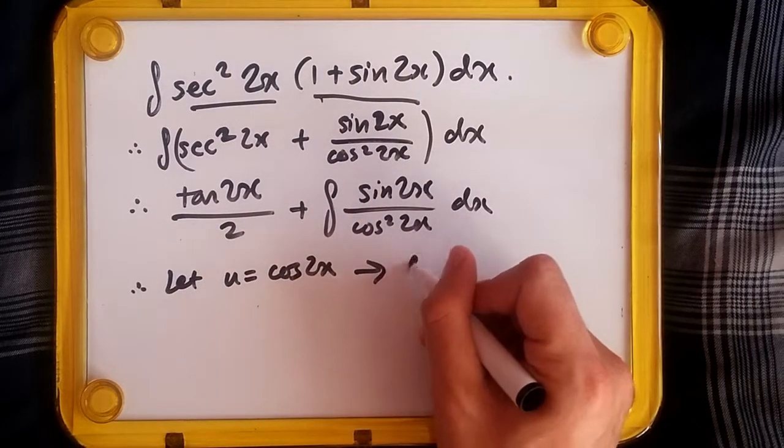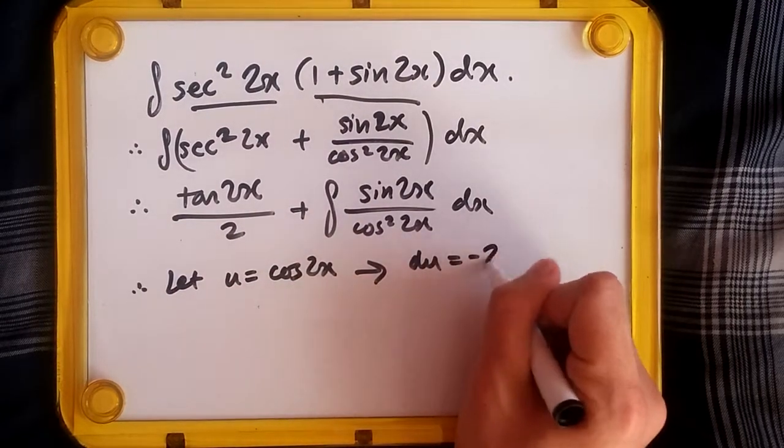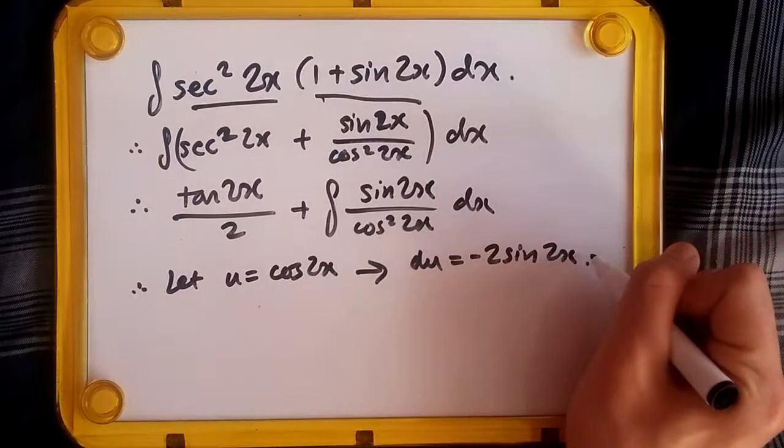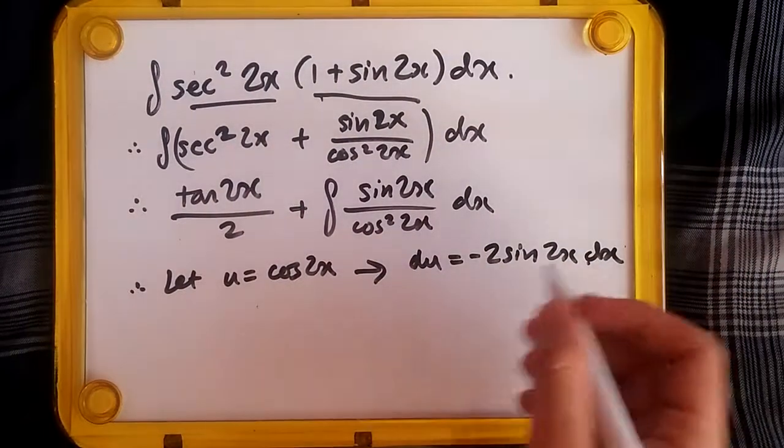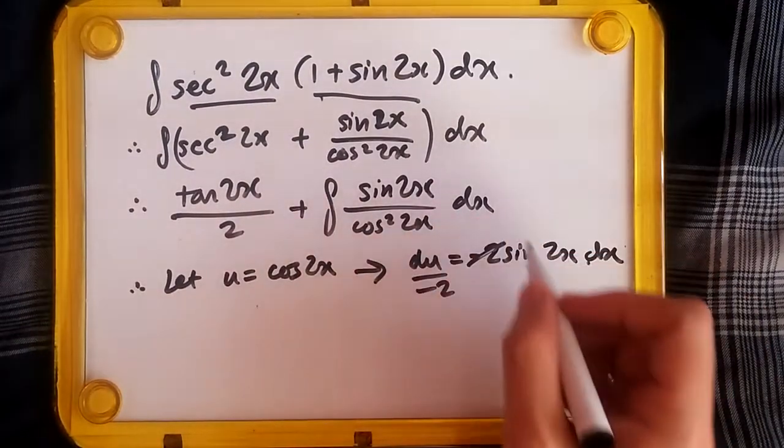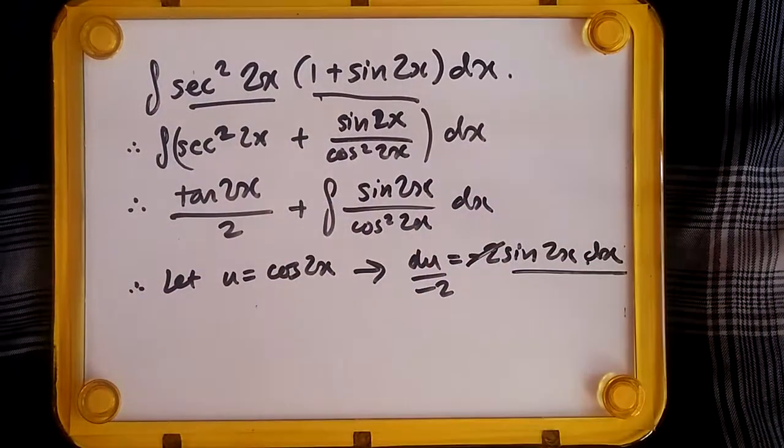this gives us du equals -2 sin(2x) dx. Dividing both sides by -2, we can replace sin(2x) dx with du over -2, and replace cos²(2x) with u². Hence we have tan(2x)/2 plus the integral...